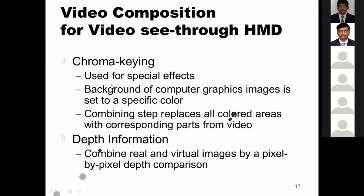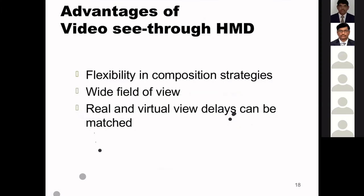Video composition for video see-through HMD uses chroma keying — similar to a green screen used in cinema for special effects. The background of the computer graphics image is set to a specific color, using a blue or green screen, and the combining step replaces all colored areas with corresponding parts from the real video. Depth information can also be used to combine real and virtual images by pixel-by-pixel depth comparison. Advantages include flexibility in composition, wide field of view, and the ability to match real and virtual view delays.